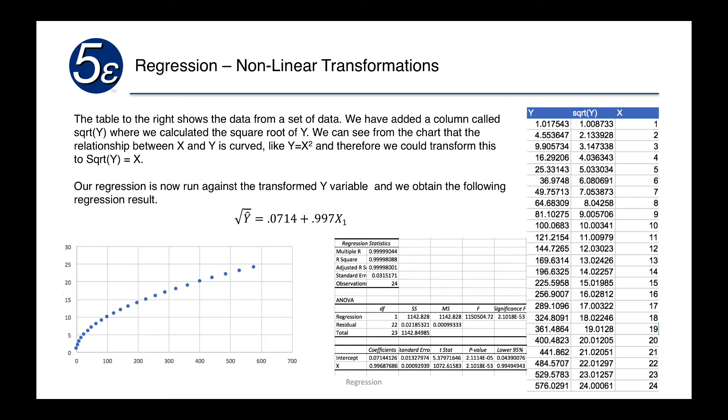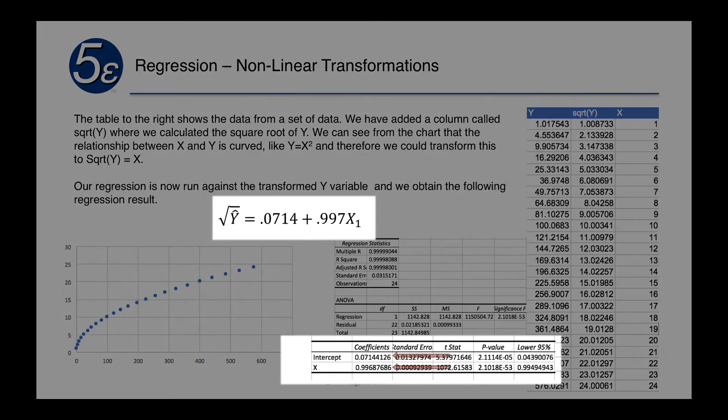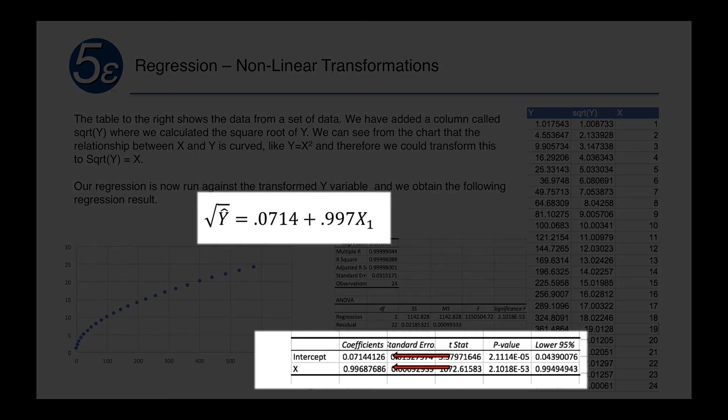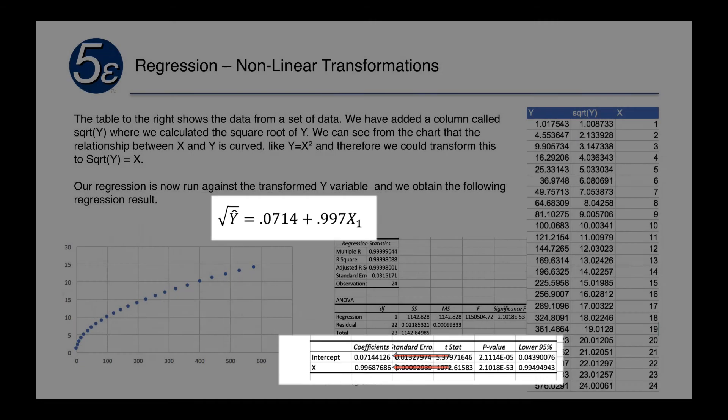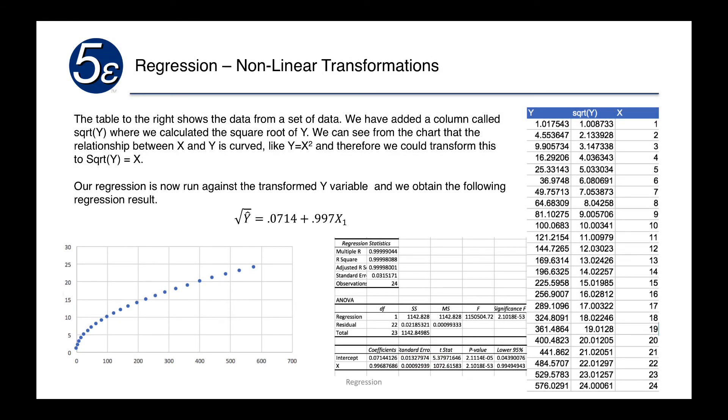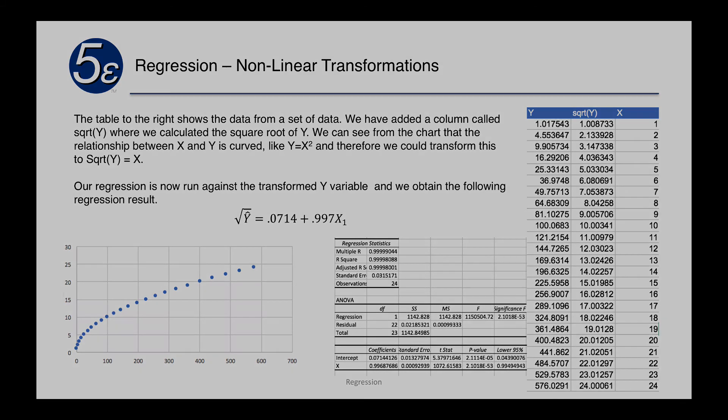Our regression is now run against the transformed y variable and we obtain the following result. The square root of the predicted y value is equal to 0.0714 plus 0.997x₁. Again, we have our coefficients interpreted the same way, but recall that it is now actually predicting the square root of y. So if we wanted the actual y value, we would need to square the predicted value.